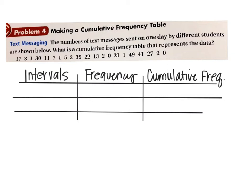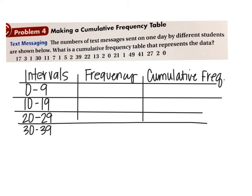So we'll make our frequency table. I have to go from 0, lowest number, to 49, highest number. So I feel like I want to go by 10s. That will give us 5 intervals. So we'll go by 10s: 0 to 9, 10 to 19, 20 to 29, 30 to 39, and then 40 to 49.